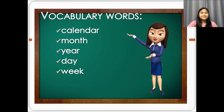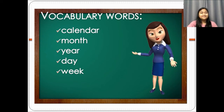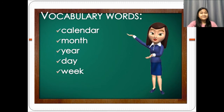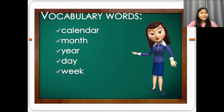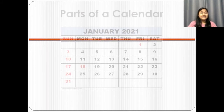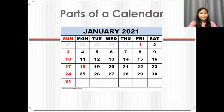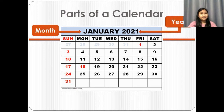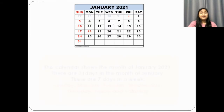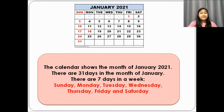Let's have the parts of the calendar. The first part is month, the next one is year, and the last one is days of the week. Now, this calendar shows the month of January 2021. There are 31 days in the month of January.